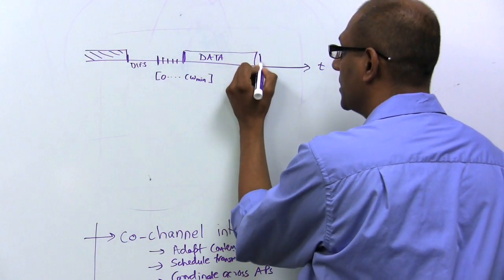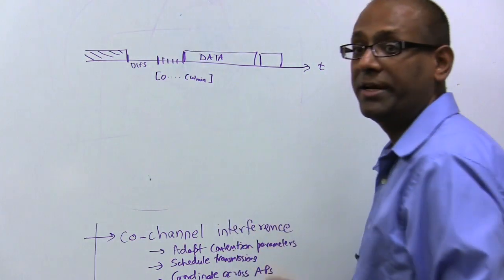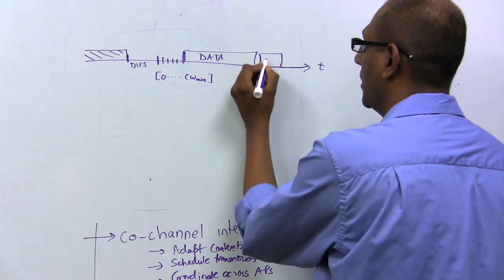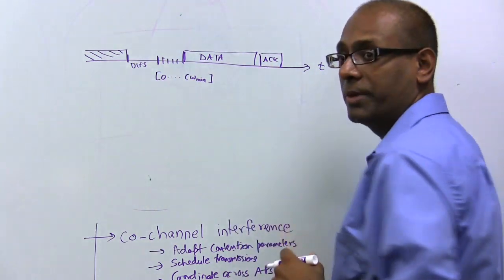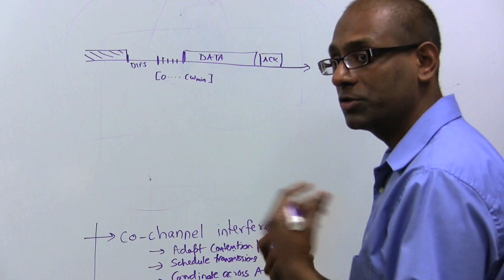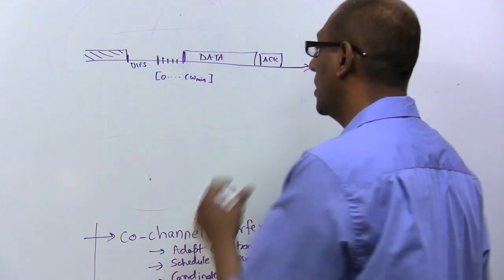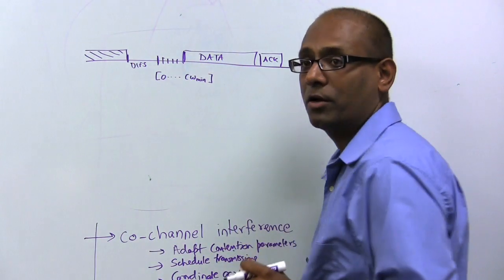And once you transmit the data, since it's not possible to do collision detection over wireless, the receiver has to transmit an acknowledgement, which is the only way the transmitter knows whether a transmission succeeded or not. So you have a transmission followed by an acknowledgement.